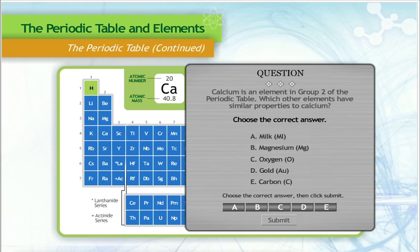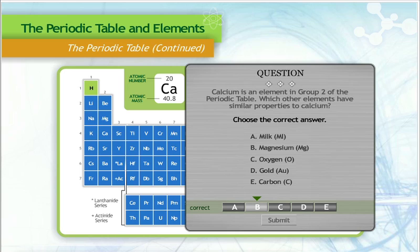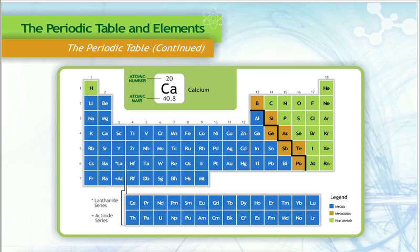Calcium is an element in group 2 of the Periodic Table. Which other elements have similar properties to calcium? The correct answer is B, magnesium. Because they are in the same column, we know that they have similar properties.